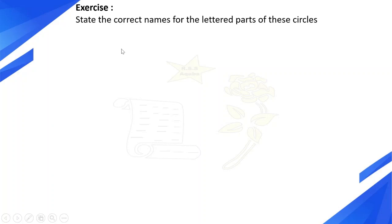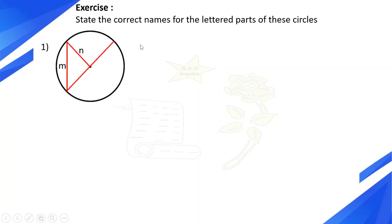State the correct names for the lettered parts of these circles. The first circle: N is a straight line from the center of the circle to a point on the circumference, so N is a radius. M is a straight line joining two points on the circle, so M is a chord.